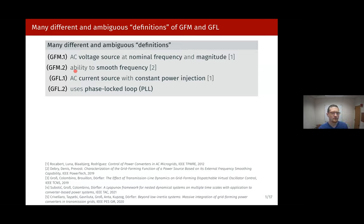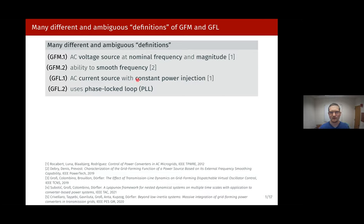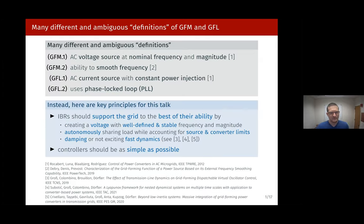Other definitions have emerged that focus on the ability to smooth frequency. For grid following, definitions are equally vague — something you will often see is defining a grid following converter as an AC current source with constant power injection, but even standard grid following control with a phase-locked loop cannot always induce that behavior. Some definitions center around whether a PLL is present, but that's also problematic because there are grid forming controls that use PLLs in auxiliary roles that most would still agree are grid forming.